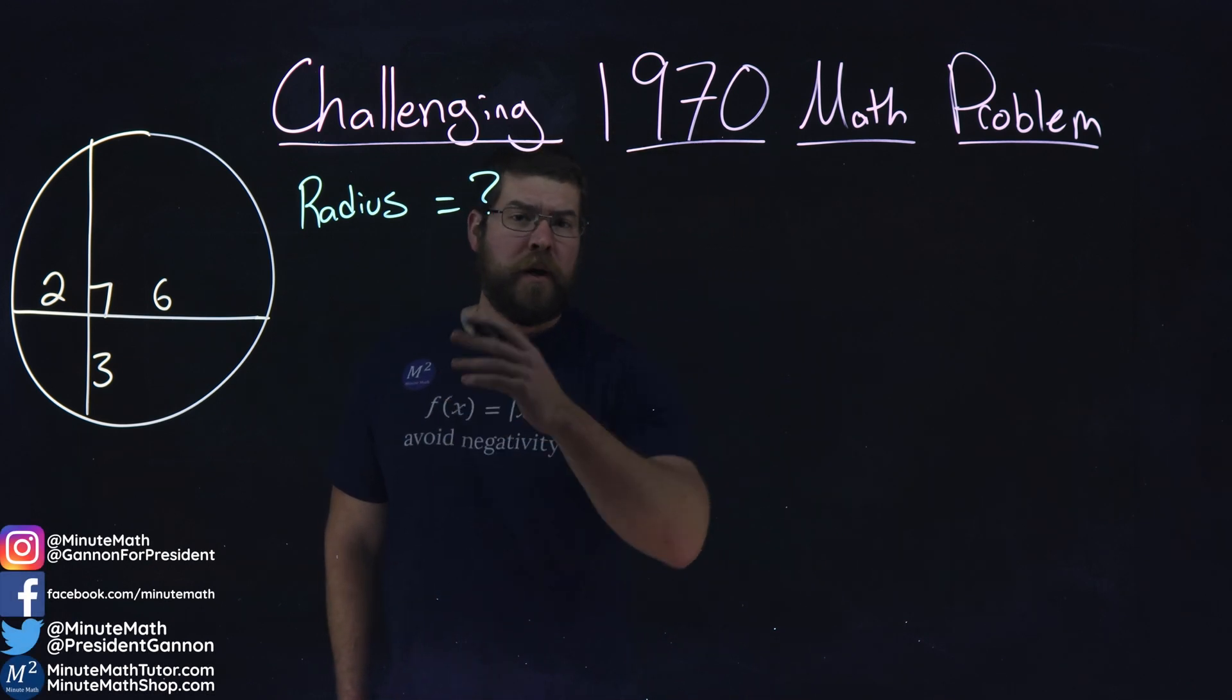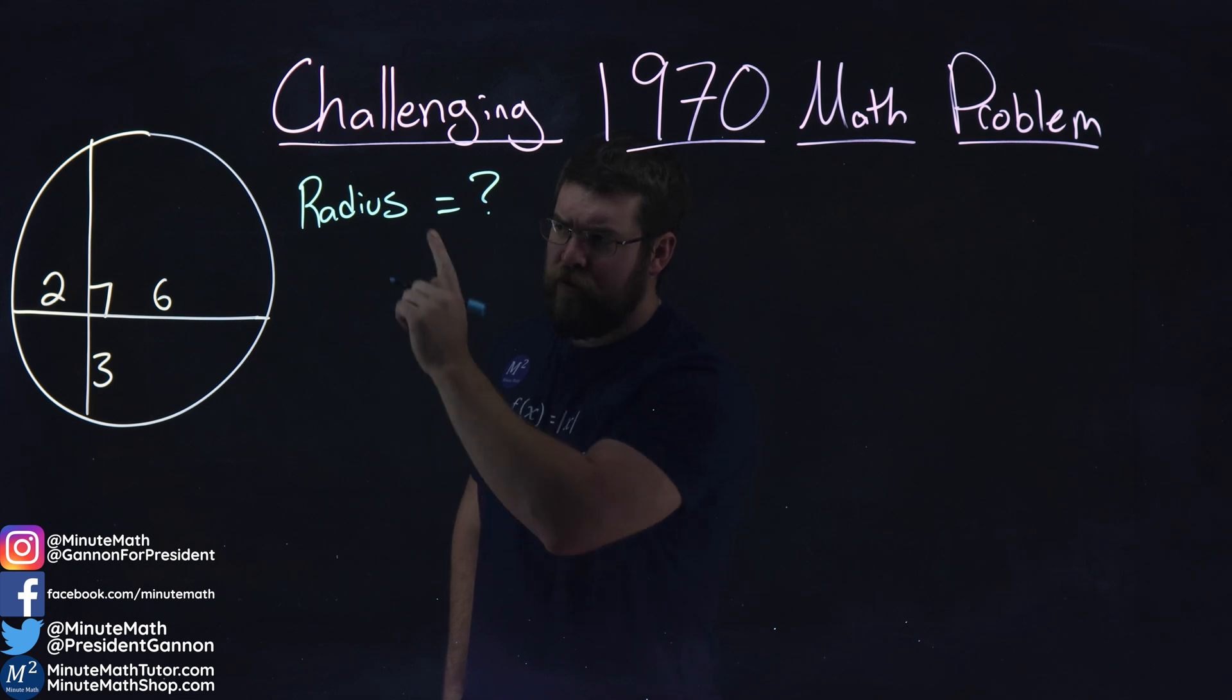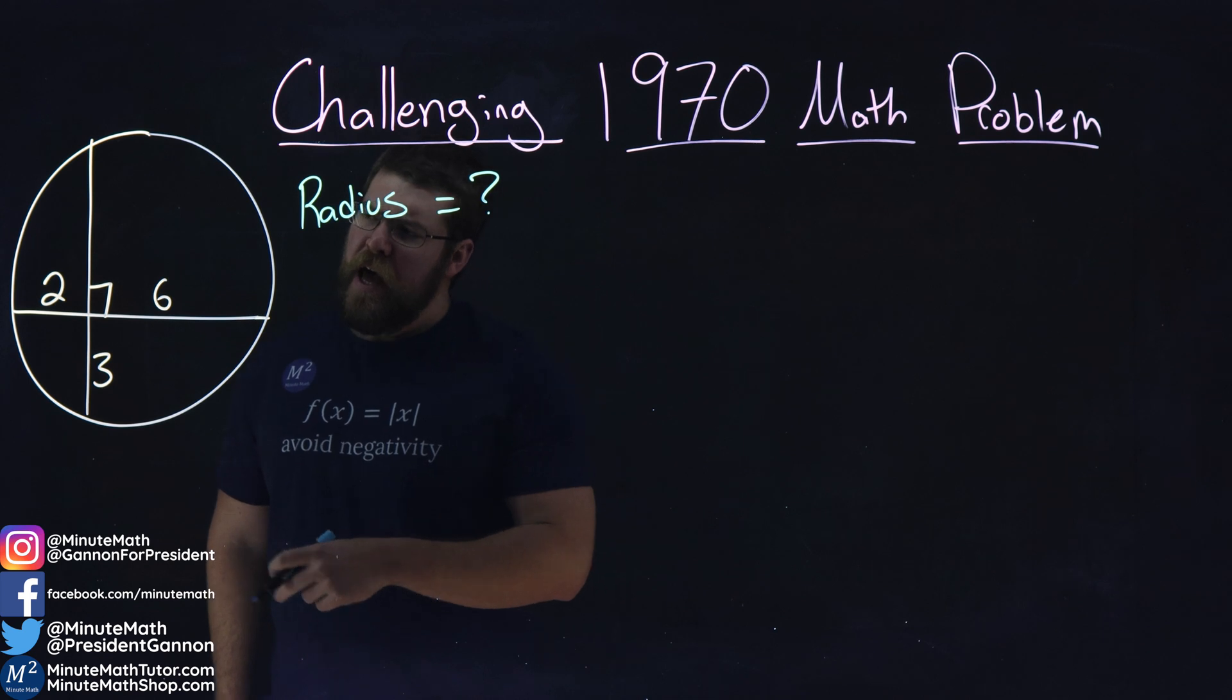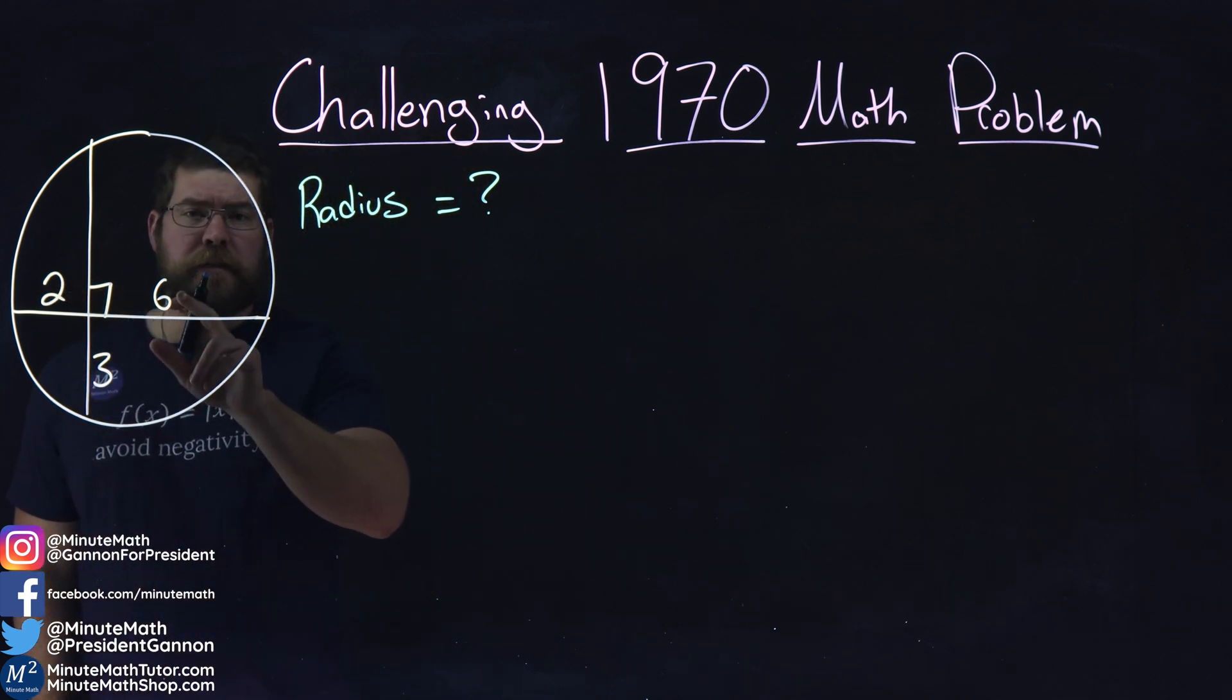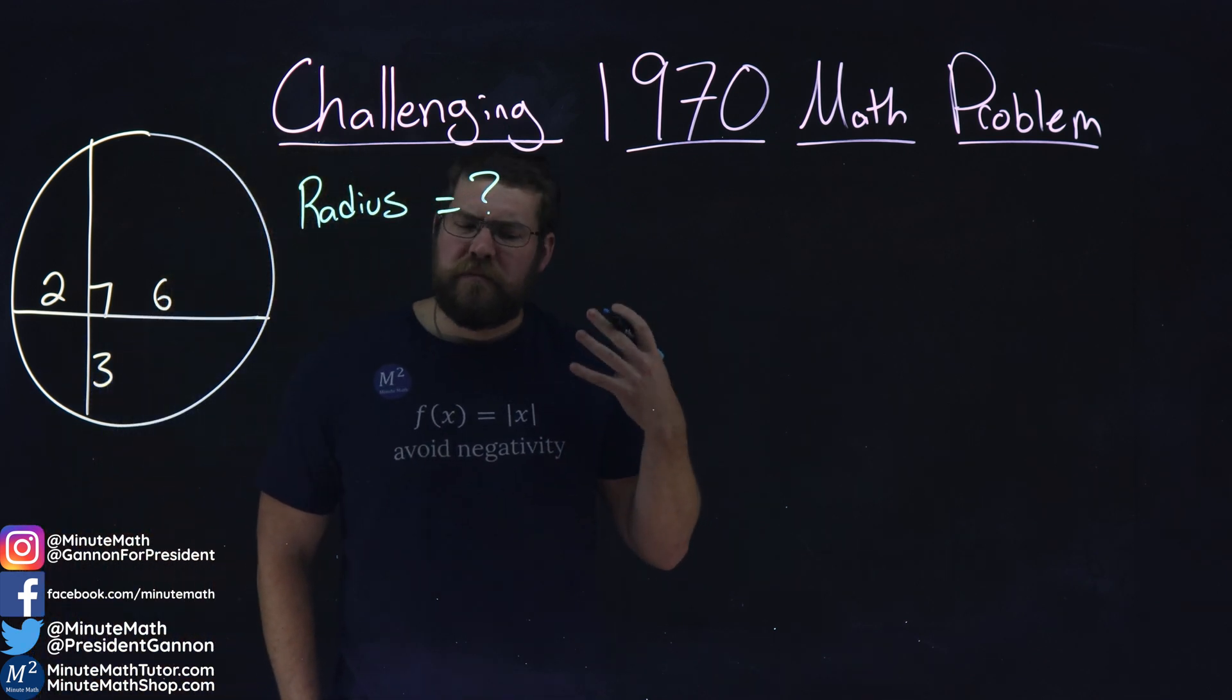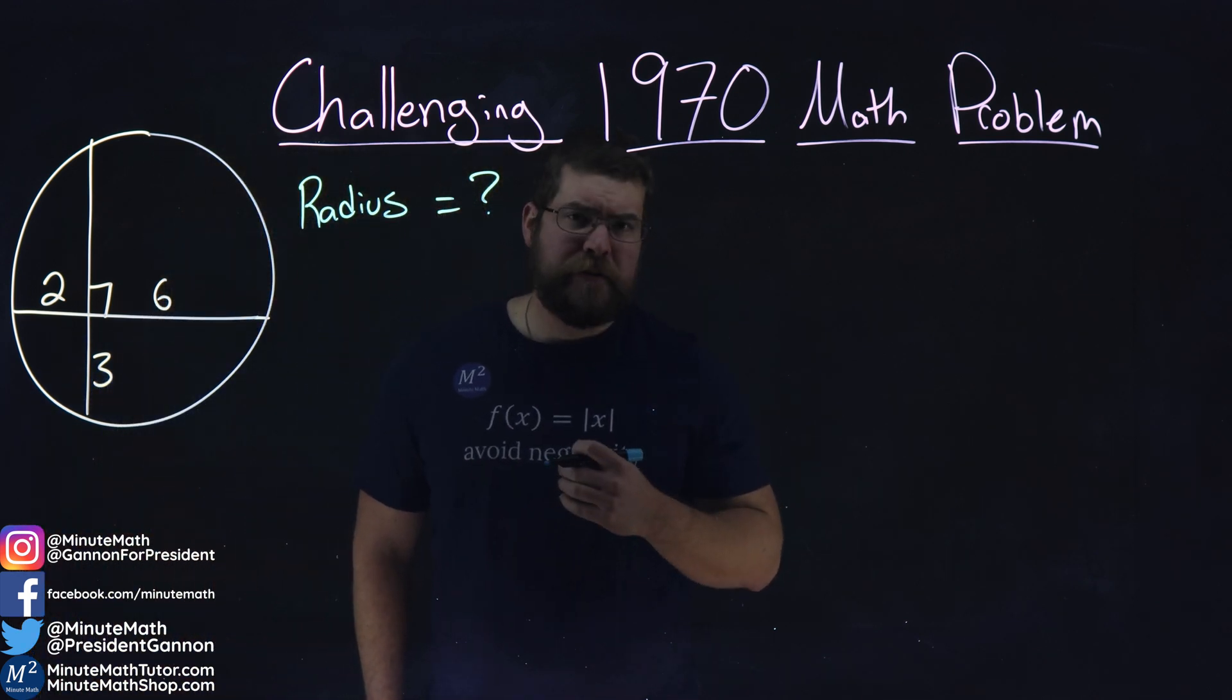This is a problem from 1970, and we're given this circle here with two chords. The chords intersect each other at a right angle, being perpendicular, and we have values of 2 and 6, 3, and we don't know what the other part of that length is right there. We need to find the radius. That's the goal here.